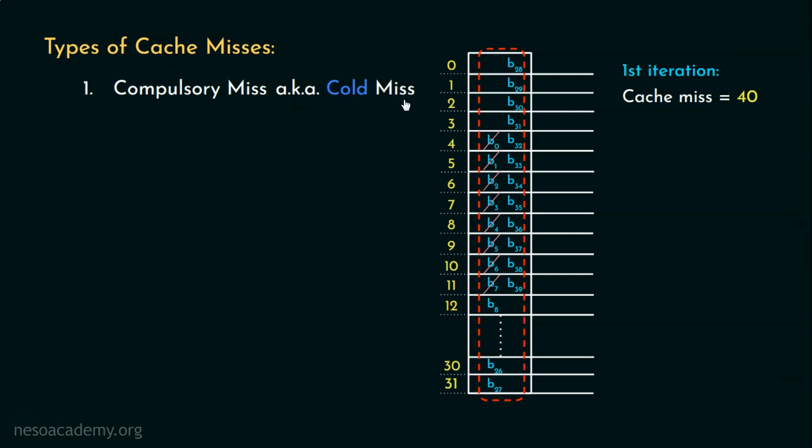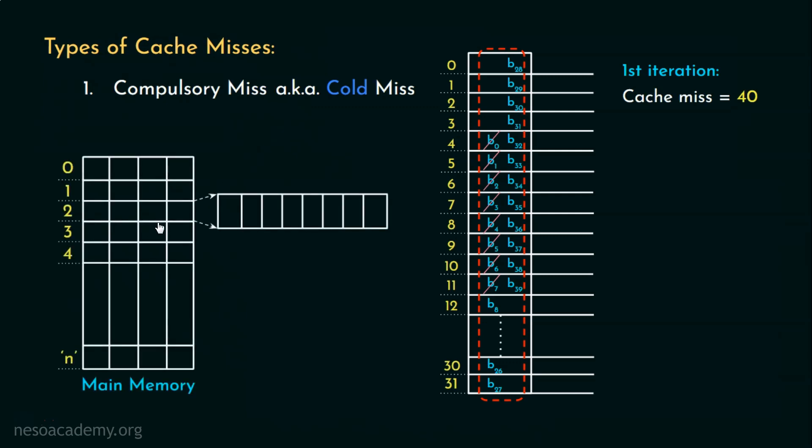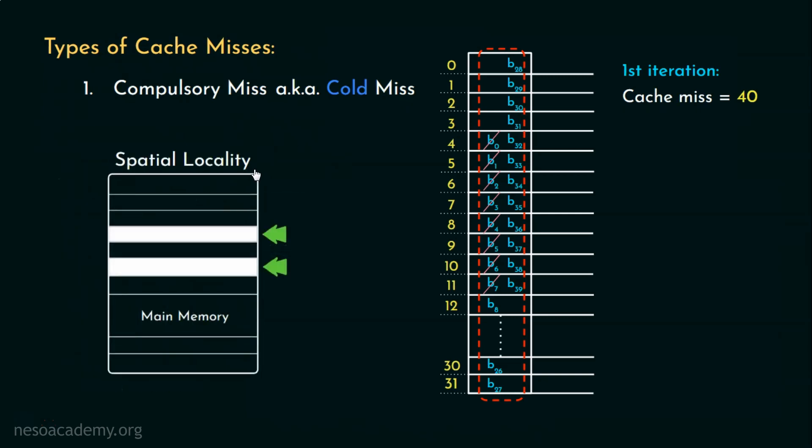These cannot be avoided unless the block has been prefetched. However, increasing the block size up to a certain extent can reduce the number of these misses exploiting the spatial locality principle.